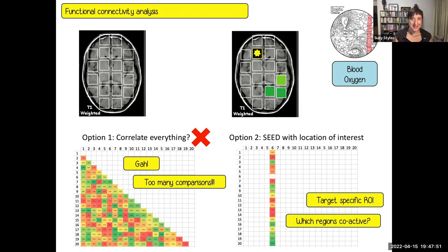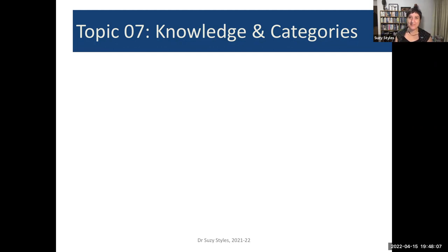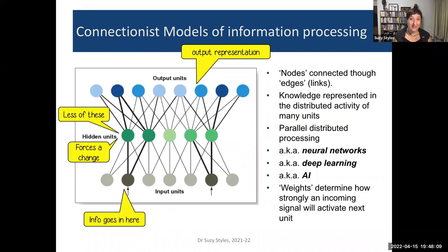On to cognitive psychology. In lecture number seven, we were looking at knowledge and the construction of categories. One of the approaches we saw in our lectures was the idea of a connectionist model of information processing.